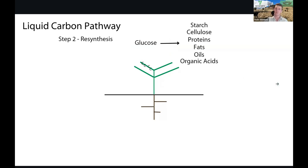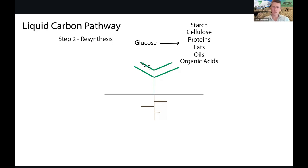During the resynthesis stage, that glucose is then converted into other plant metabolites - so that can be starch, cellulose, proteins, fats, oils, and organic acids. This is the plant rebuilding different compounds.